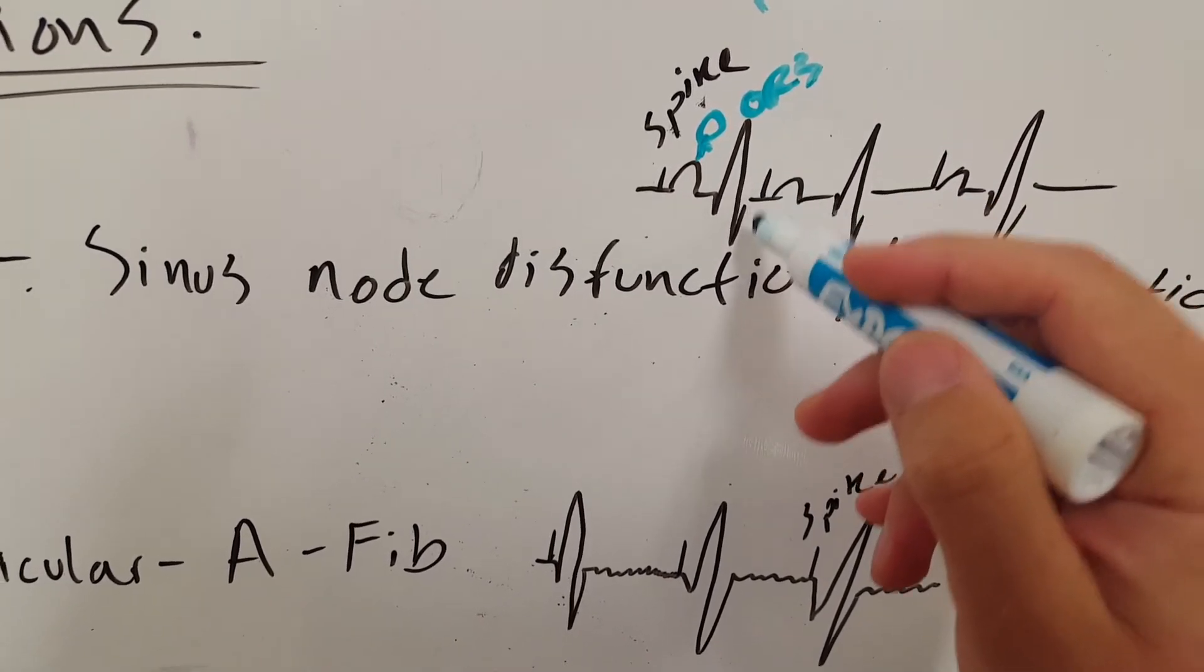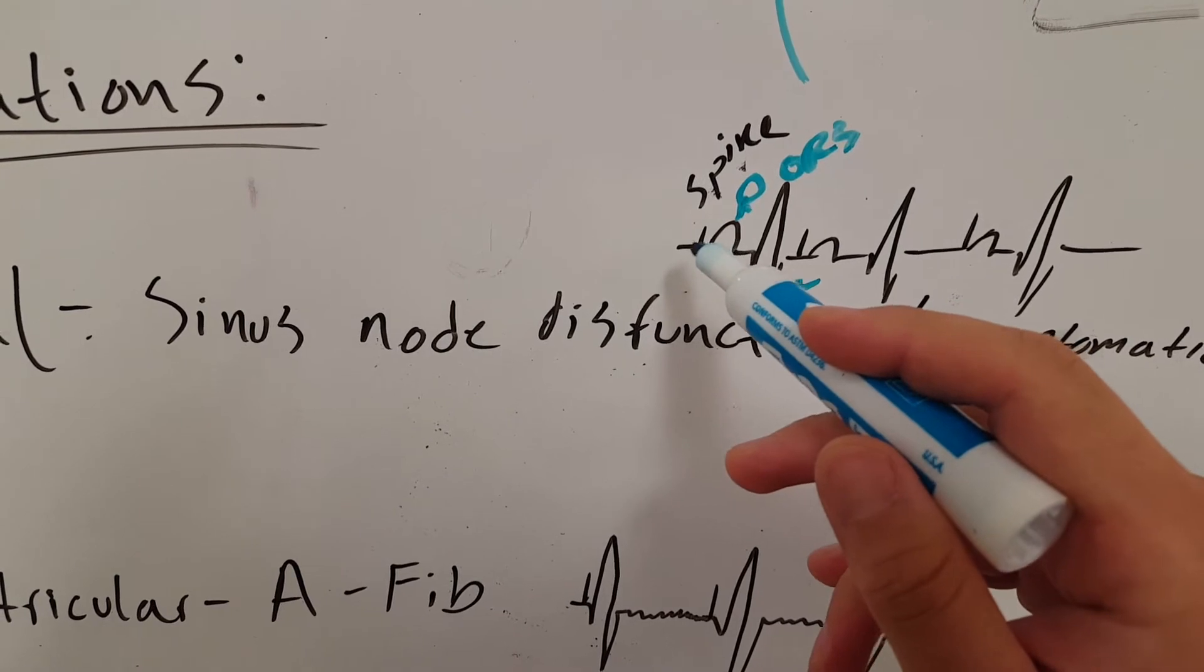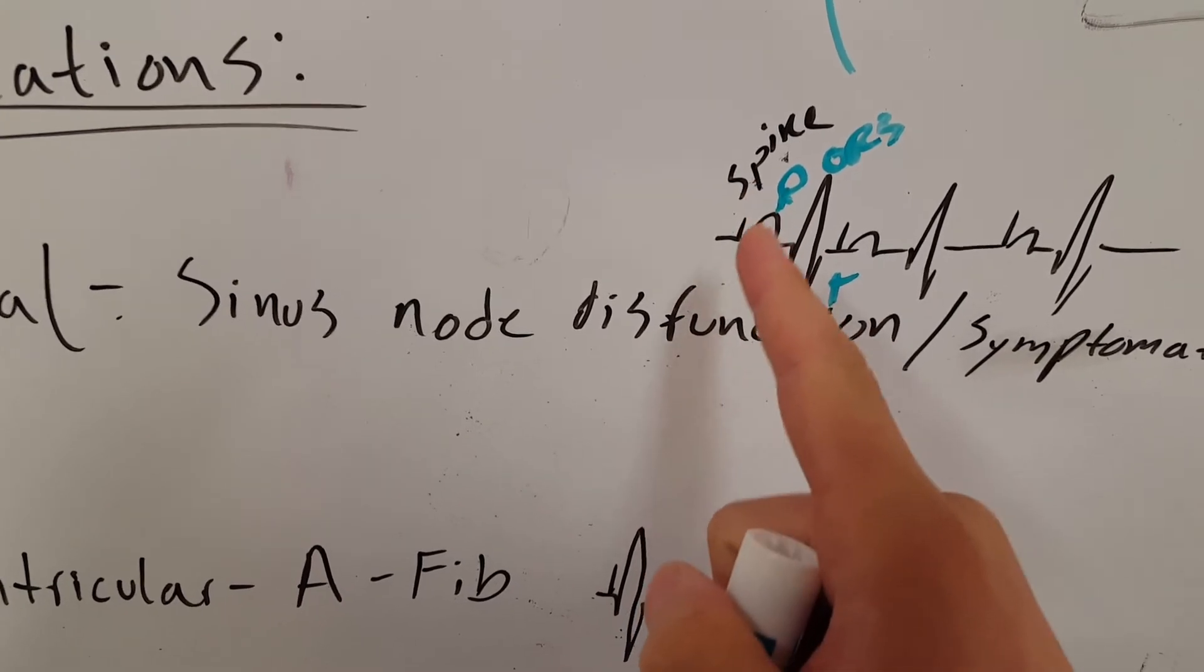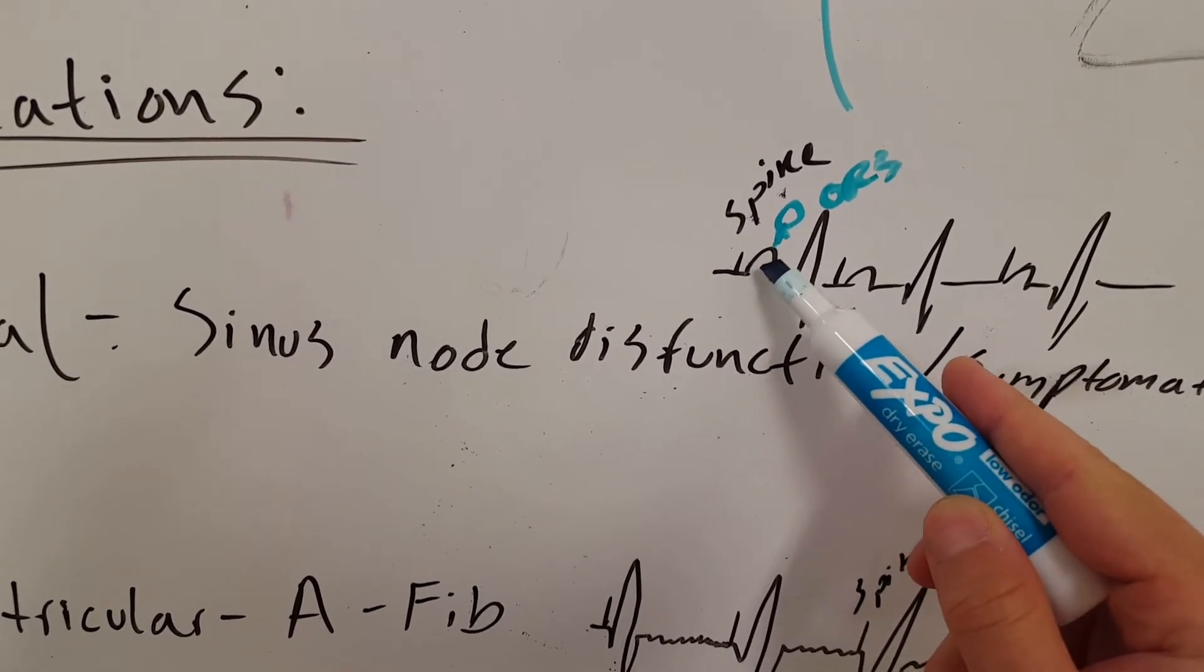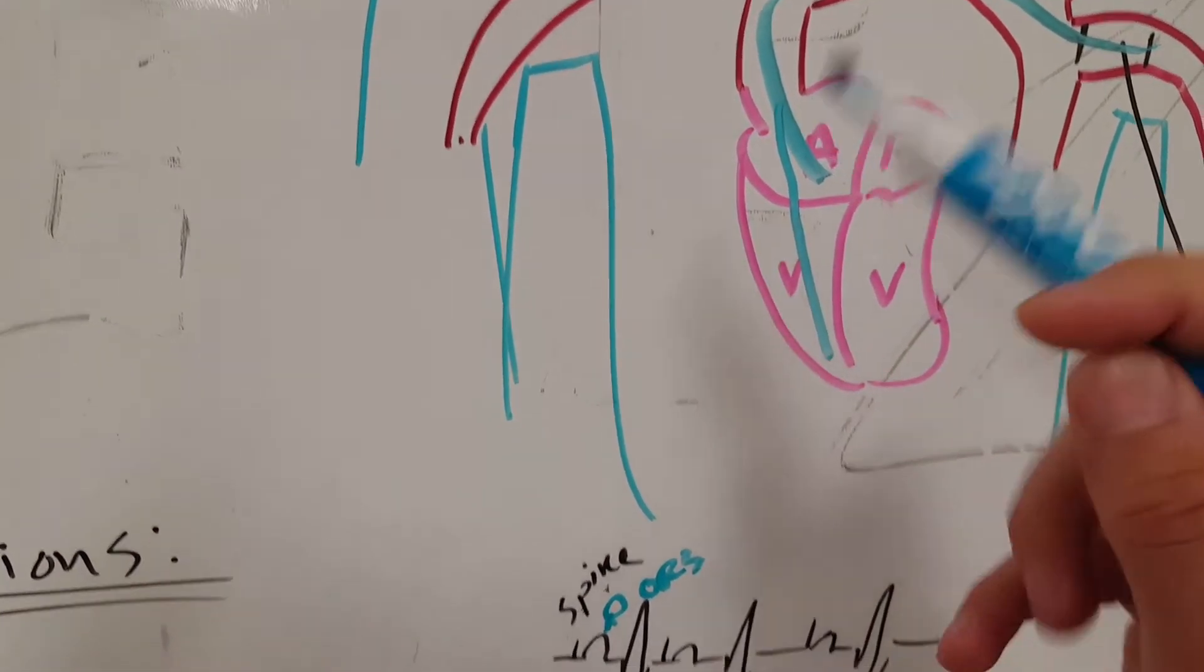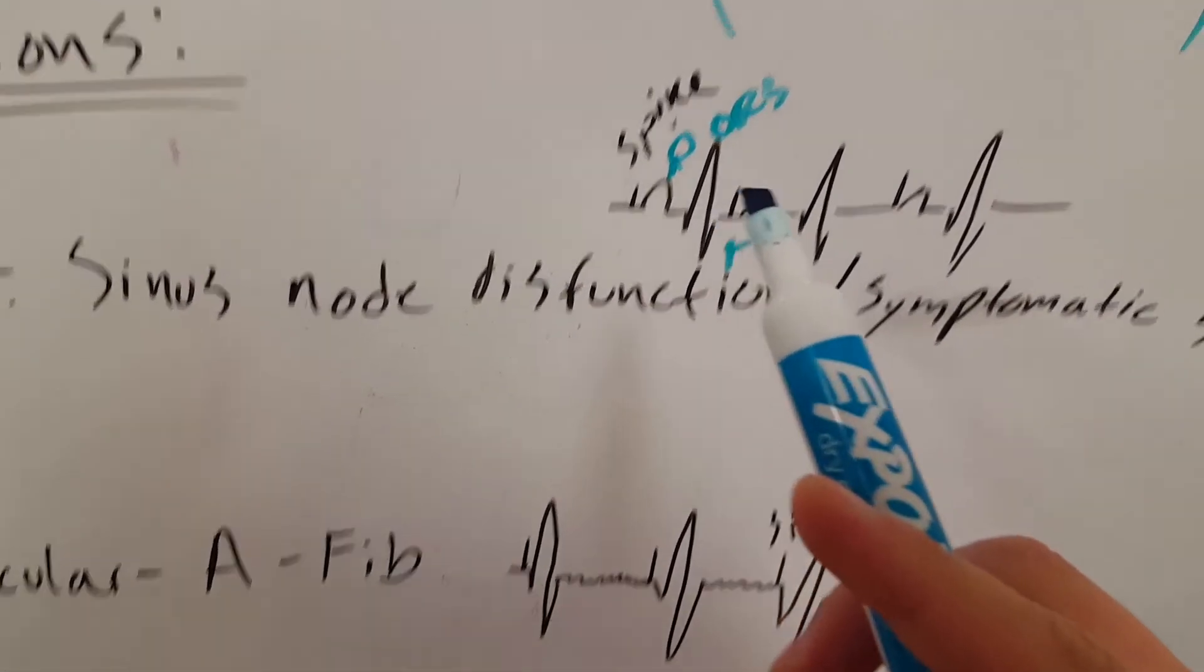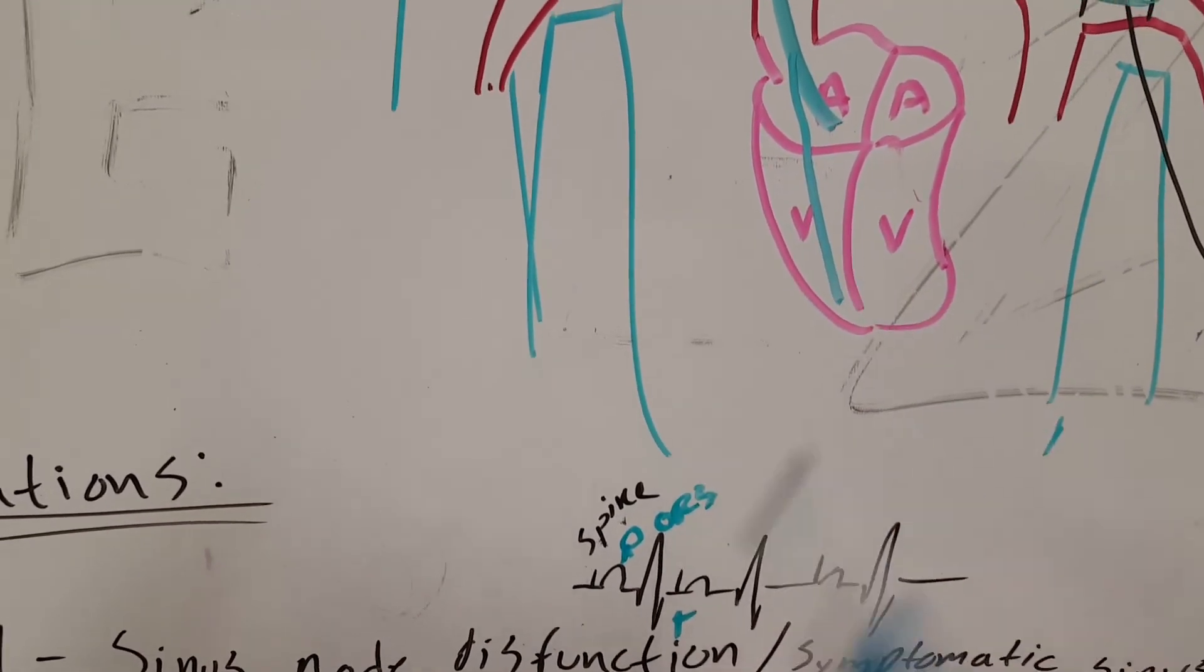If you see a spike, like a little spike line that goes up or below - it doesn't really matter, depends on which lead you're looking at - if you see a spike followed by a P wave, we know that P represents the atriums, so that means the lead is in the atrium and it's sending impulses to the atrium. If you see the spike right before the QRS, that means it's sending the impulses to the ventricles and the lead is in the ventricle.